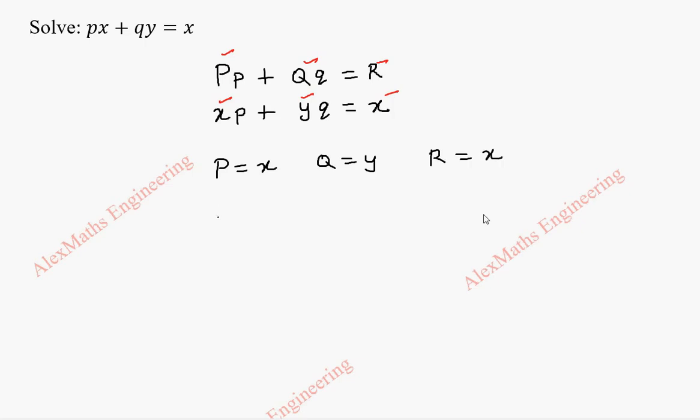So it is enough to solve this equation: dx by P equal to dy by Q equal to dz by R. By substituting we get dx by x equal to dy by y equal to dz by x.